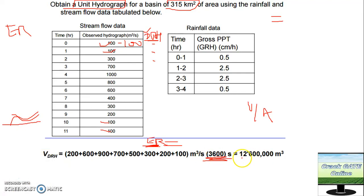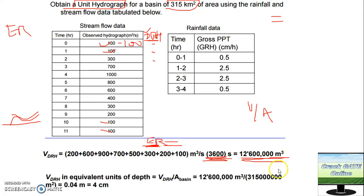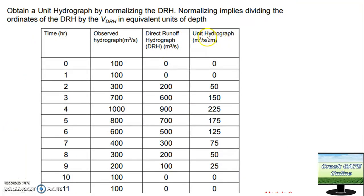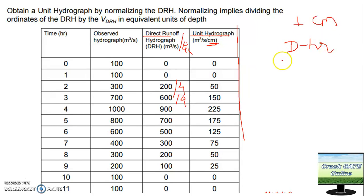For effective rainfall: first calculate the DRH — for example, 300 minus 100 equals 200. Add all DRH values, multiply by delta-t of one hour (3600 seconds) to get the volume. Then divide by the given area of 315 to get the effective rainfall. Now you have all the data for the DRH and the effective rainfall, so you can calculate the unit hydrograph. Simply divide all DRH ordinates by 4 (the effective rainfall) to get the unit hydrograph ordinates.